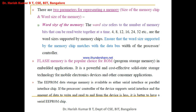We have completed the memory section till now — covering the different types of read-only memories and random access memories that can be used in embedded systems. Nowadays, flash memory is the most popular choice for read-only memory. We have finished section 2.2 for today's session. In the next class, we will understand sensors and actuators.